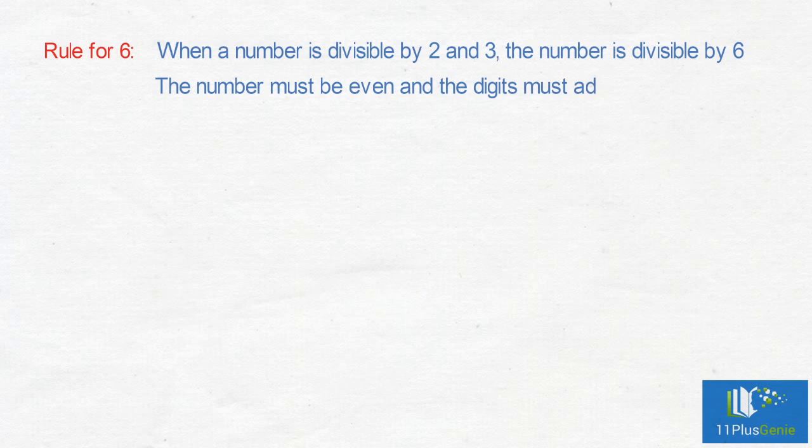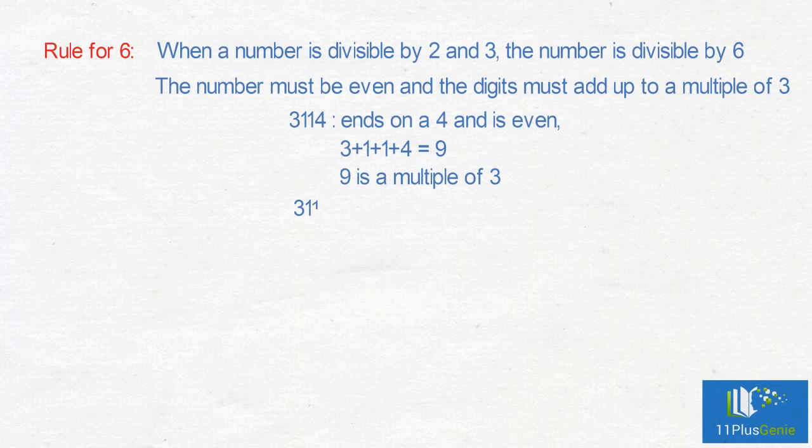Rule for 6: 1575 must add up to a multiple of 3. 3114 is divisible by 6.